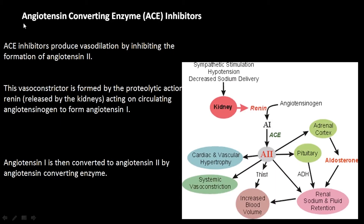Another enzyme involved in hypertension is the angiotensin converting enzyme, ACE. ACE inhibitors produce vasodilation. ACE converts angiotensin 1 to angiotensin 2, which leads to vasoconstriction and increased blood volume. Drugs which block ACE prevent angiotensin 1 from being converted to angiotensin 2, so vasoconstriction does not happen. These are called ACE inhibitors: benazepril, captopril, enalapril, fosinopril, lisinopril, ramipril, and so on.